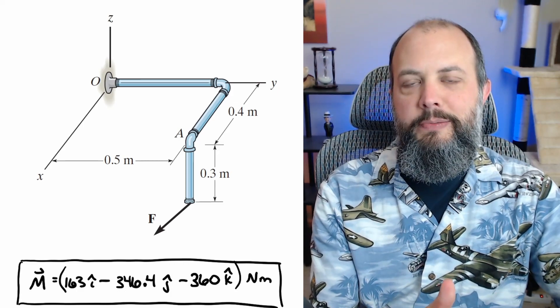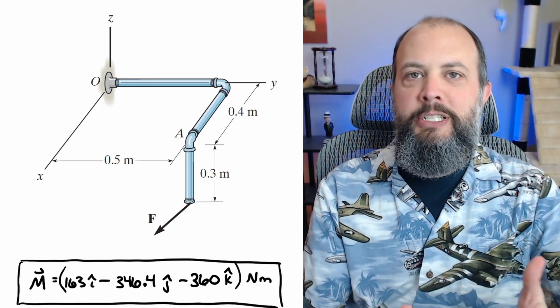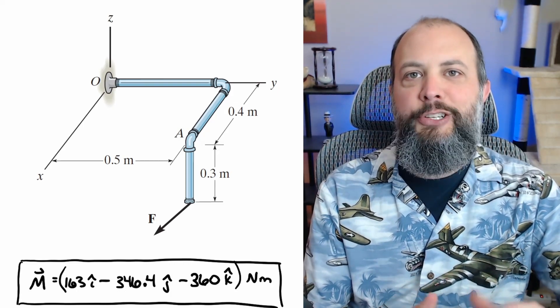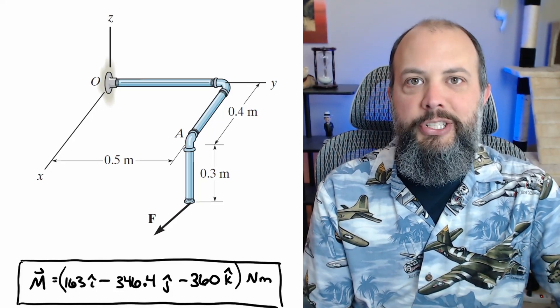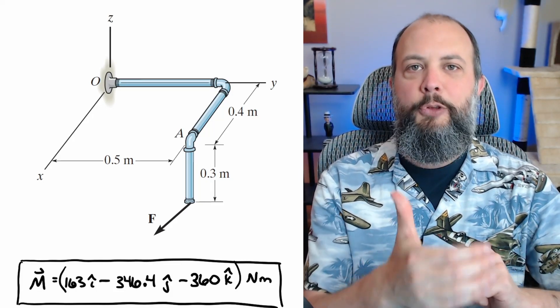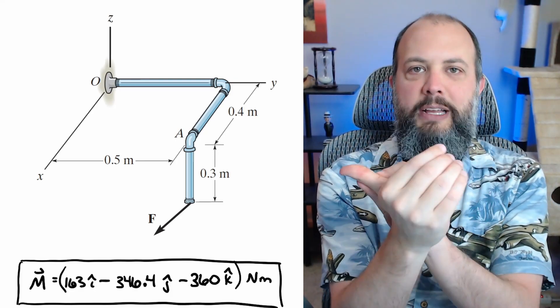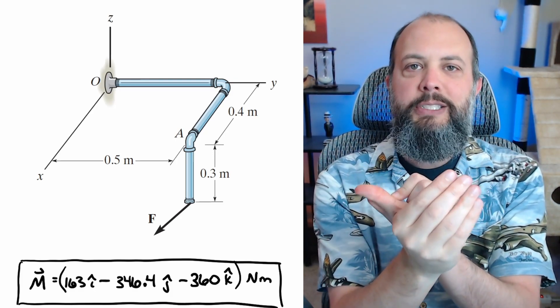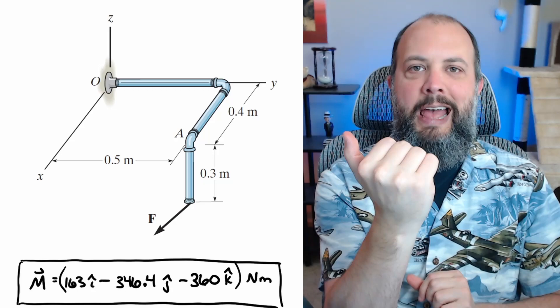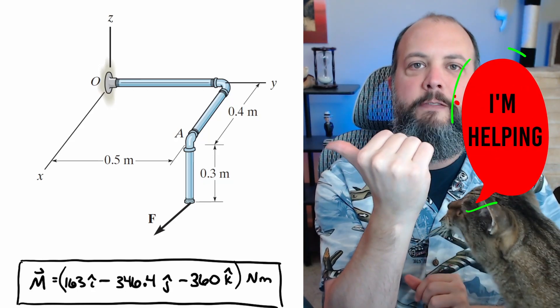If you wanted to check whether this final answer makes sense, in particular to check whether or not you made any sign errors, you can use the right hand rule for moments to make sure that each of your i, j, k terms are at least in the correct direction. So for moments, the right hand rule means that if your thumb points in the direction of an axis, a positive moment will wrap around that axis in the same direction that your fingers curl.